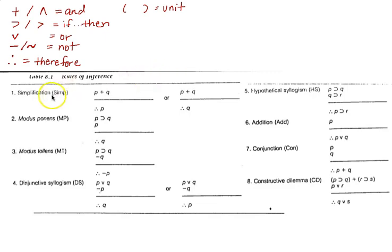Now I want to go over each of these argument forms. They have names, so let me highlight what I'm looking at. Simplification — that first one. Simp, S-I-M-P, is the abbreviation. And that's what we're going to put on the line on the worksheet.